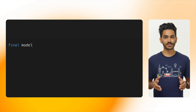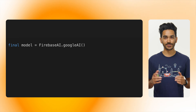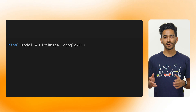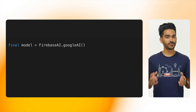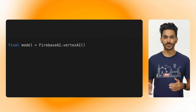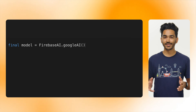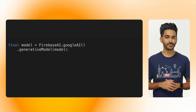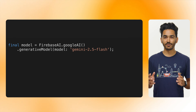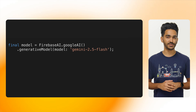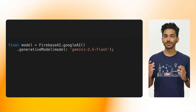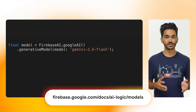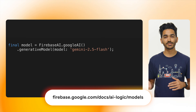First, we get an instance of Firebase AI and then specify the backend that we want to use. To use the Gemini Developer API, we'll write Google AI here. If you'd rather use the Vertex AI Gemini API, you can write Vertex AI instead. Then, we specify the model we want to use by passing it to the Generative Model function. I'll be using Gemini 2.5 Flash, but you can choose the model that fits your needs best. To learn more about the supported models, take a look at the Firebase documentation, which lists all the available models and their use cases, as well as quotas and pricing.